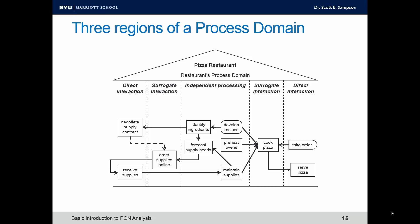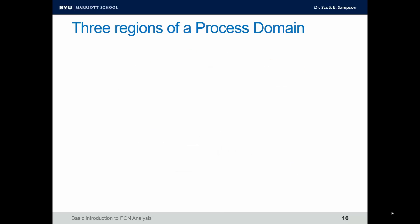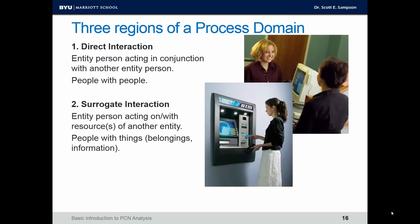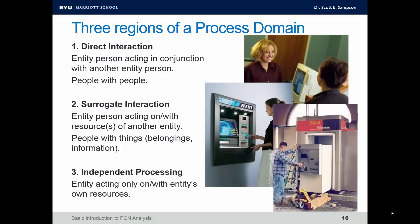Finally, in the center of the entity's process domain, we have the region of independent processing — steps the entity controls that don't involve any interaction with another entity. Steps in independent processing have maximum control by that entity, whereas as we move to surrogate and direct interaction, the entity has to cede some control to other entities. In summary: direct interaction is person to person; surrogate interaction is person to resource — it could be information or belongings; and independent processing means the entity is acting on resources they own and control directly.